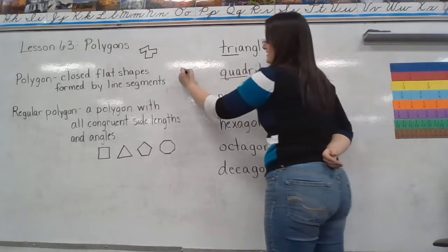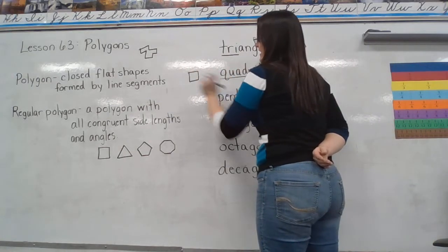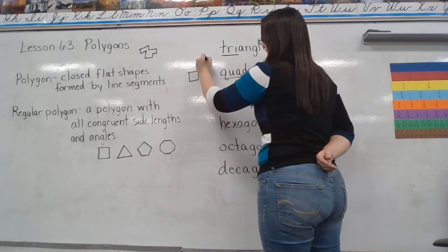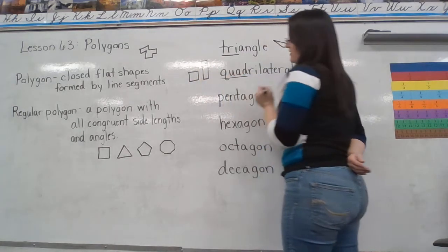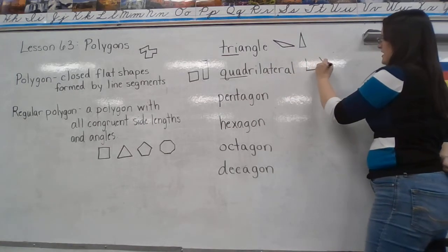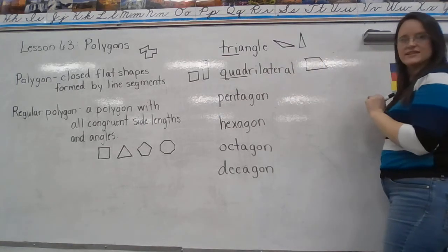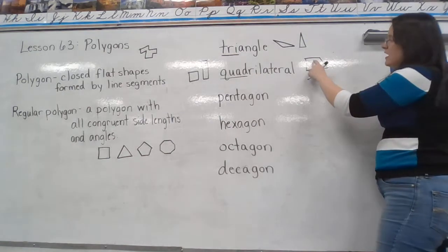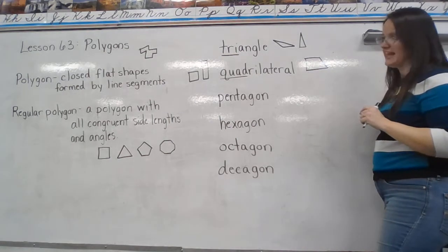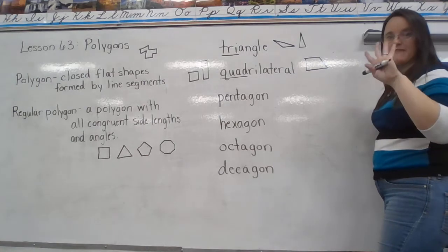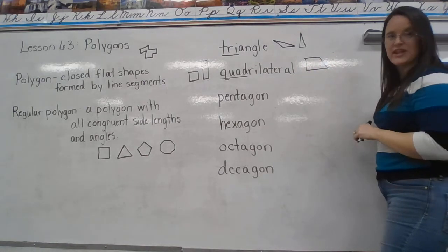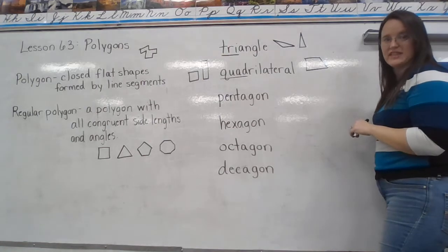There are tons of different types of quadrilaterals. We might have a square, which is a regular quadrilateral. You might have a rectangle, or one that's not a square or a rectangle, but it is still a closed, flat shape formed by four line segments. So this is still considered a quadrilateral.